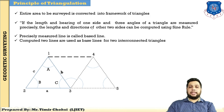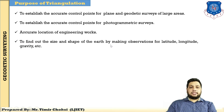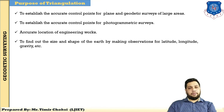The purposes of triangulation are: first, to establish accurate control points for plane and geodetic survey of larger areas; second, to establish accurate control points for photographic survey; third, for accurate location of engineering works; and fourth, to find out the size and shape of the earth by making observations for latitude, longitude, and gravity.